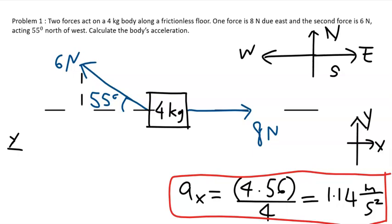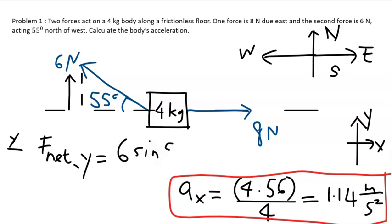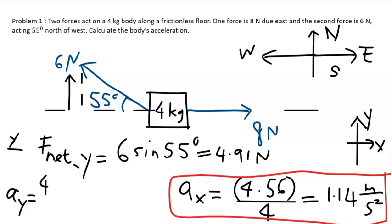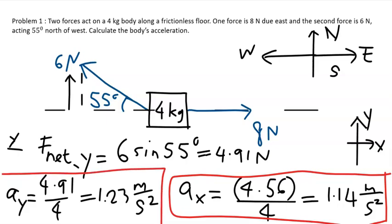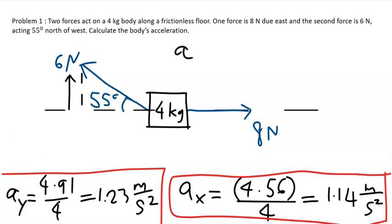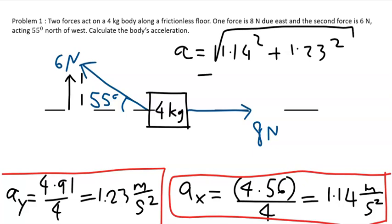The y component of the 6 N force is heading northward; the 8 N force has no y component. So the net force along the y direction is simply 6·sin(55°), which equals 4.91 N. The acceleration along the y direction is 4.91 divided by 4, giving 1.23 m/s². The magnitude of the total acceleration is √(1.14² + 1.23²), which equals 1.68 m/s².